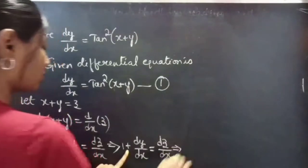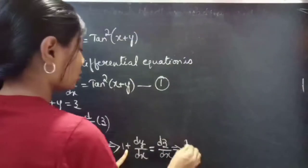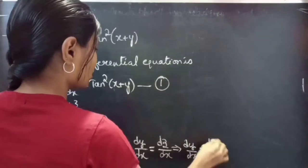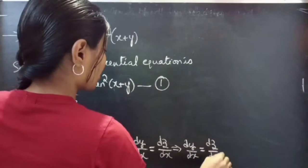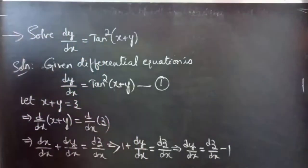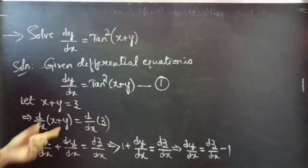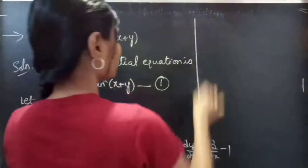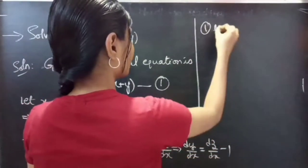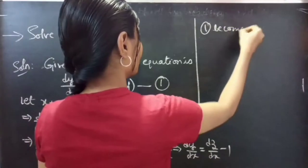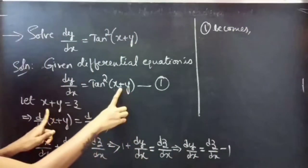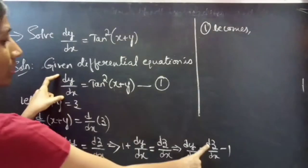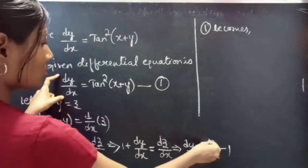Now, we can take the 1 to the RHS and we get dy by dx equals to dz by dx minus 1. Now, we will simply replace x plus y by z and dy by dx by dz by dx minus 1.